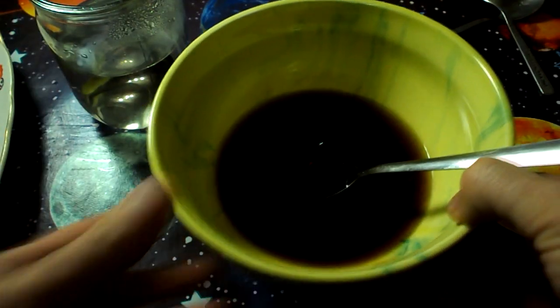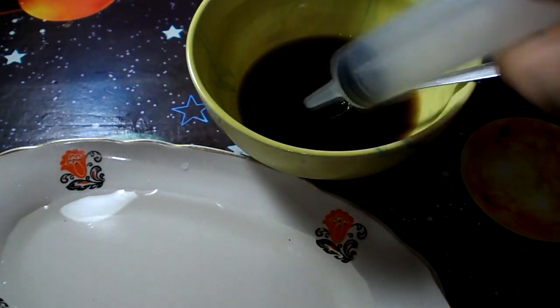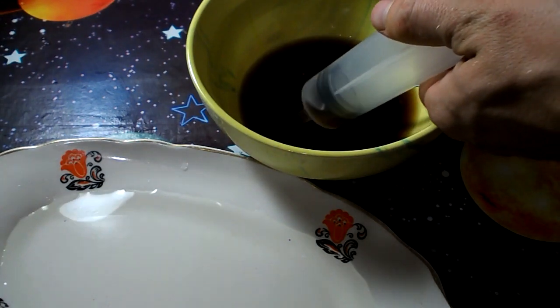Now I am ready to cook caviar. Calcium chloride is poured into a saucer and sodium alginate in a syringe. Then little by little drip into the saucer.